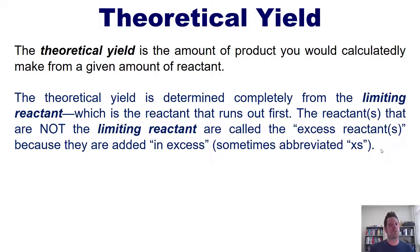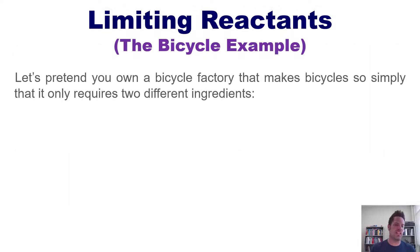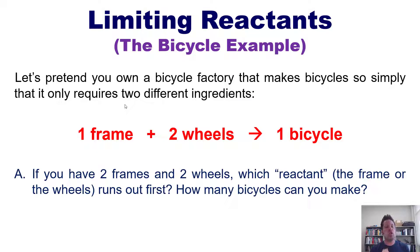Now in order to understand the limiting reactant a little bit better, I'm going to use the bicycle example. Let's pretend that you own a bicycle factory that makes bicycles so simply that it requires only two different ingredients or reactants, the frame and the wheels. You have to add one frame together with two wheels in order to yield or produce one bicycle. Now let's ask some questions. If you have two frames and two wheels, that's all you have, which reactant, the frame or the wheels, runs out first and how many bicycles can you make?